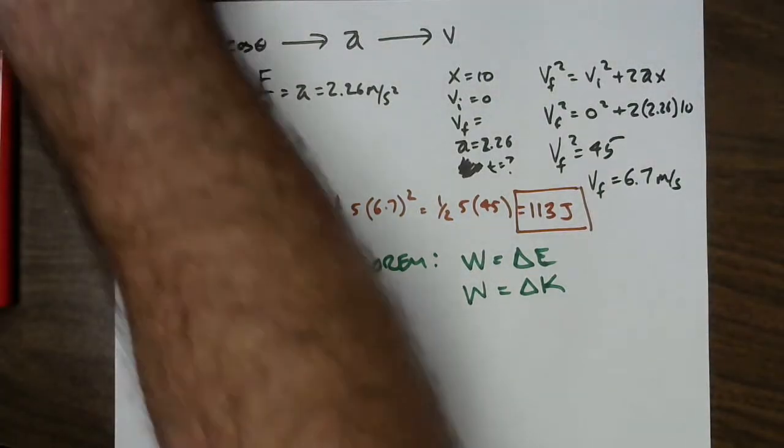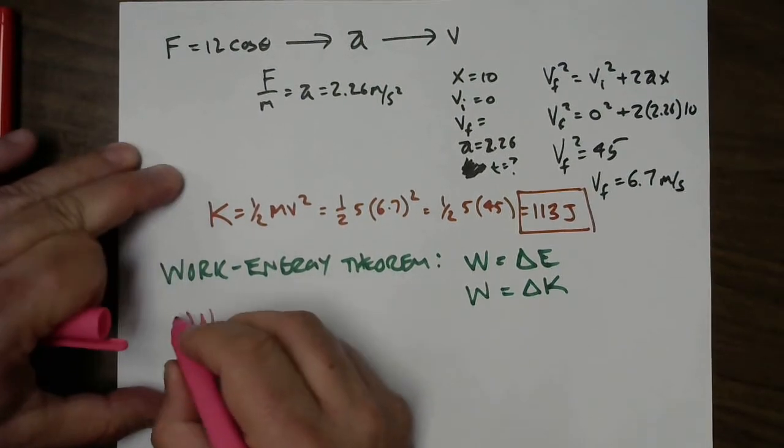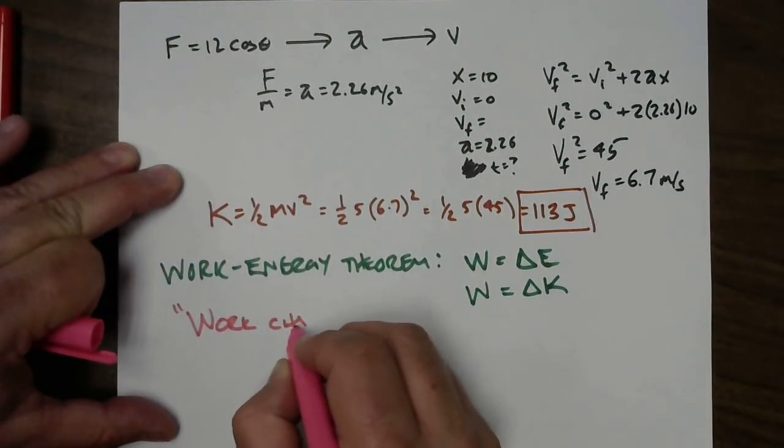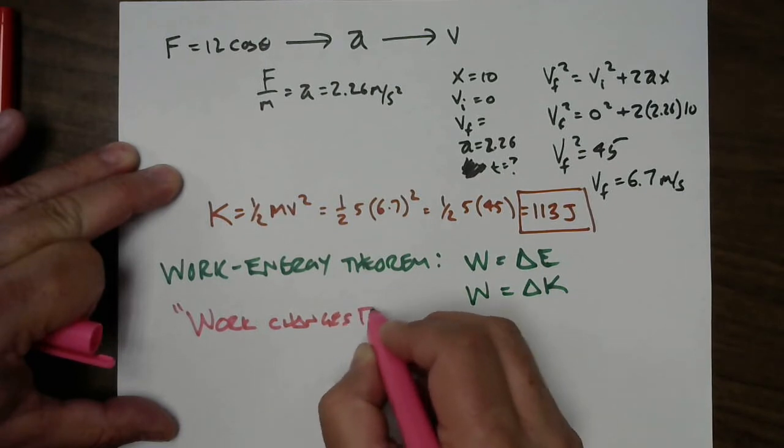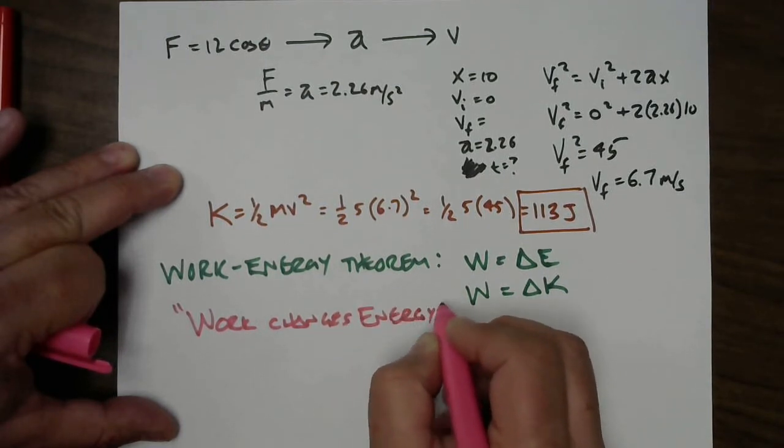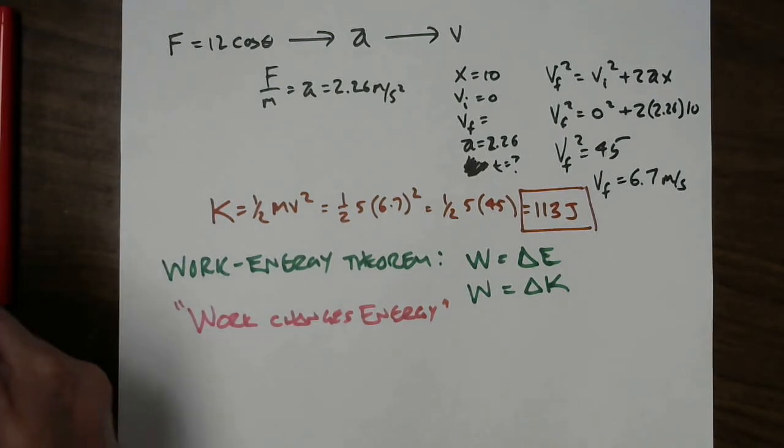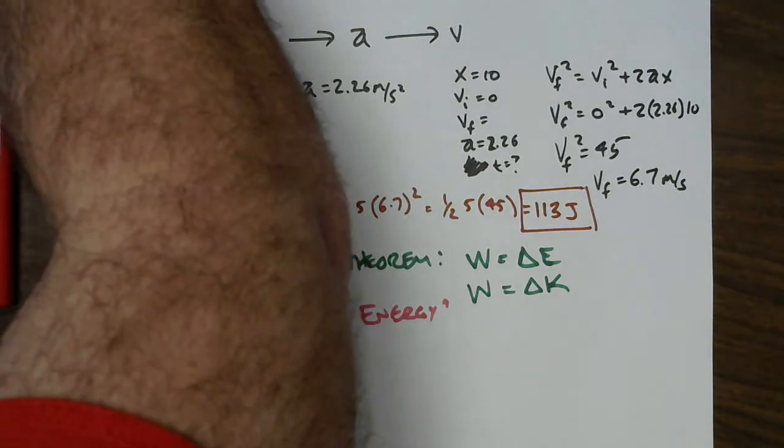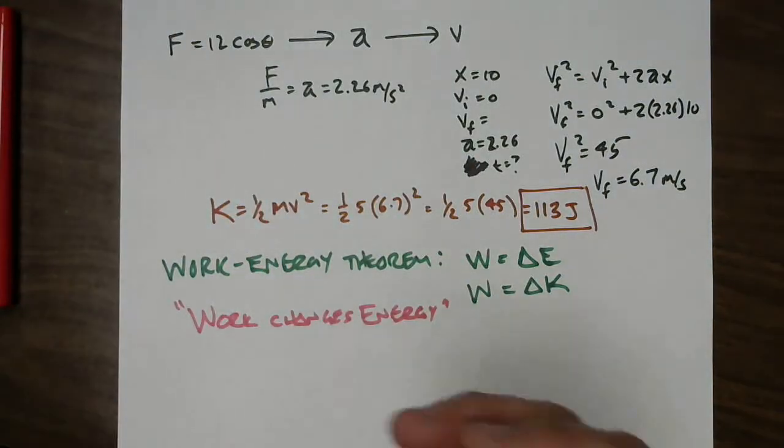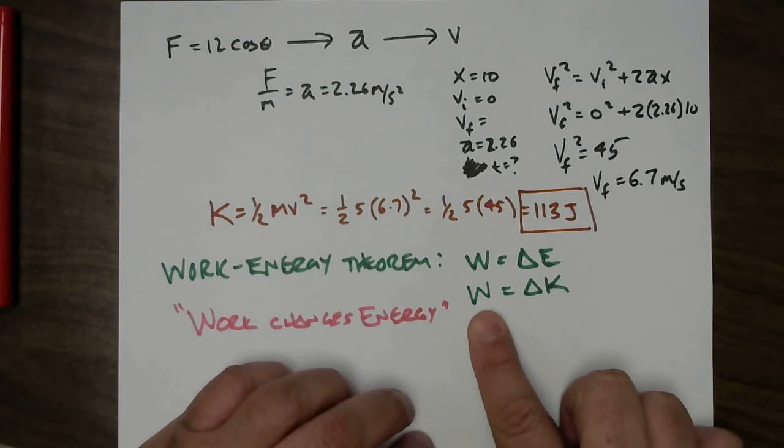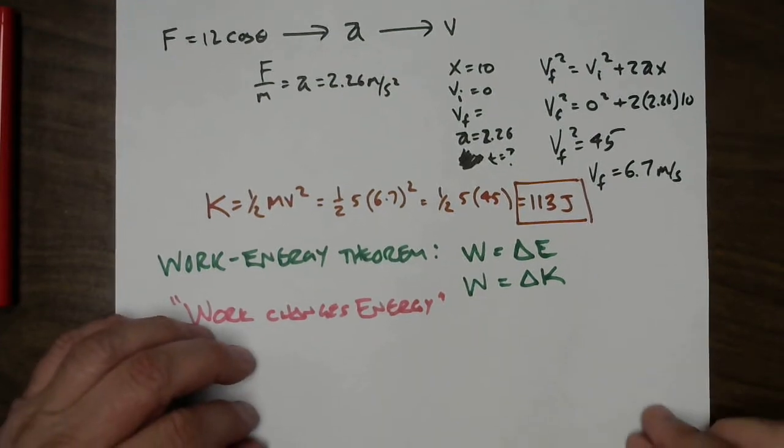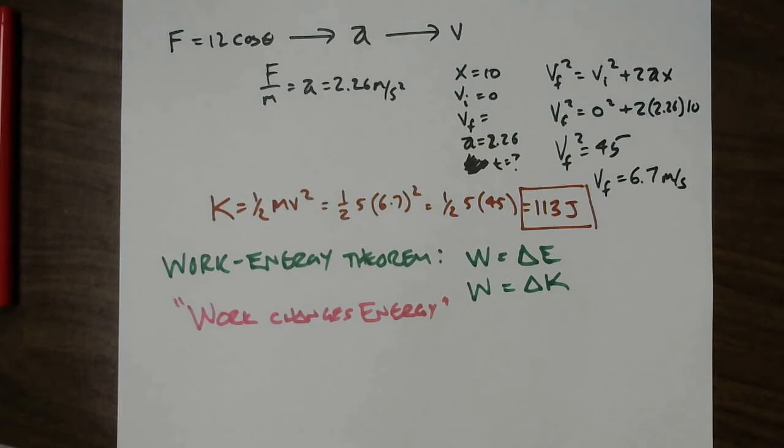That deserves pink. This is kind of a specialized version of the more general conservation of energy, which says that energy can neither be created nor destroyed. It can only change forms. And here it's changing form from work into kinetic energy. That's if you think of work as a type of energy. The other way to think of work, as I said, is that work is the scooper or the mechanism by which energy is transformed.